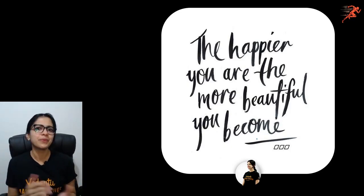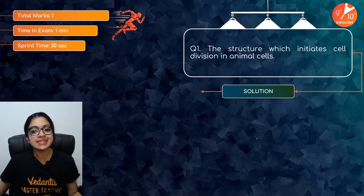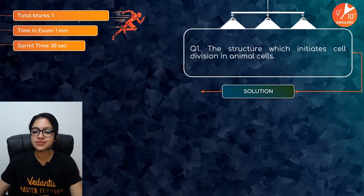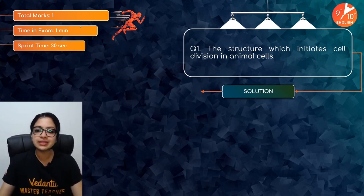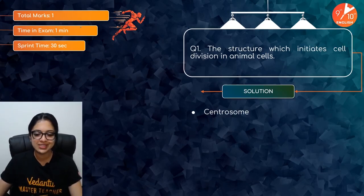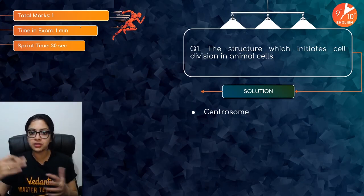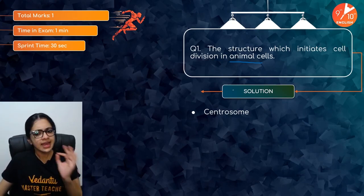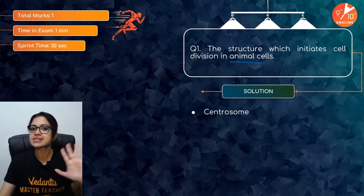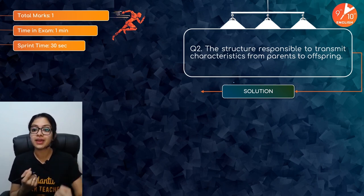Question 1: What is the structure which initiates cell division in animal cells? This could be asked as a one-mark question and you wouldn't need more than 10–15 seconds to answer it. The answer is centrosome, which is comprised of centrioles, and is very important for spindle formation. Centrosome is absent in plant cells, so when the question specifies animal cells the answer beyond doubt is centrosome.